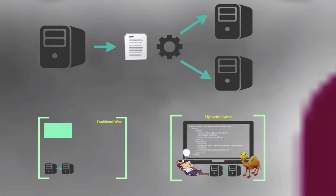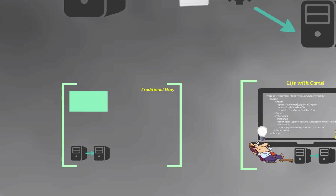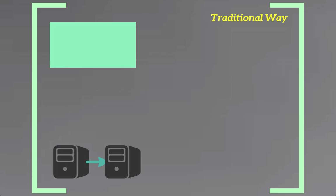So traditionally, this is how you would normally do it when you want to integrate between two systems. It's reading from an XML file from a folder, routing the documents to another place depending on its contents, and then transforming the contents into different formats, then placing it into a messaging queue.